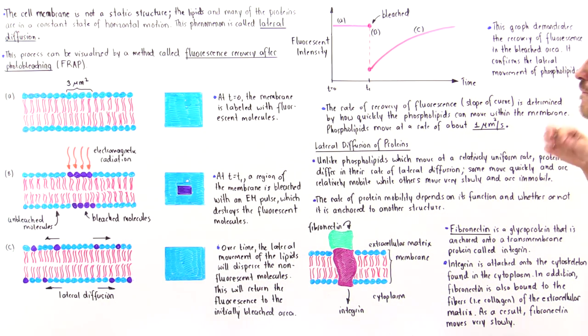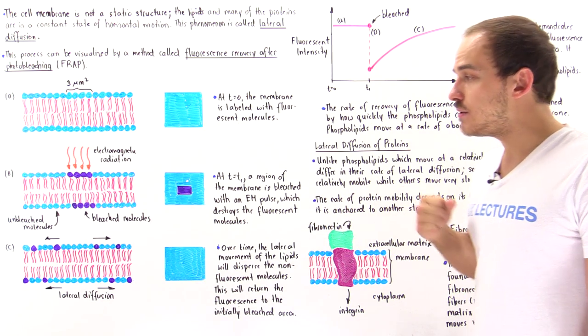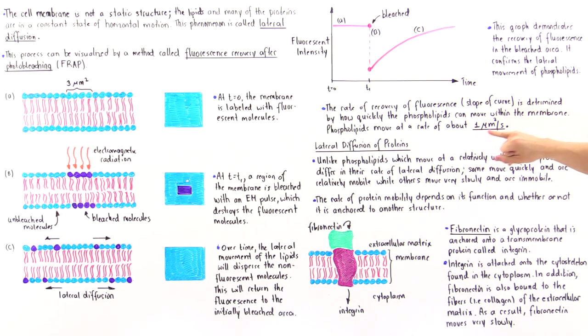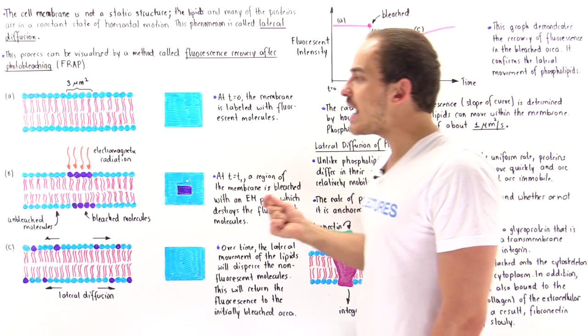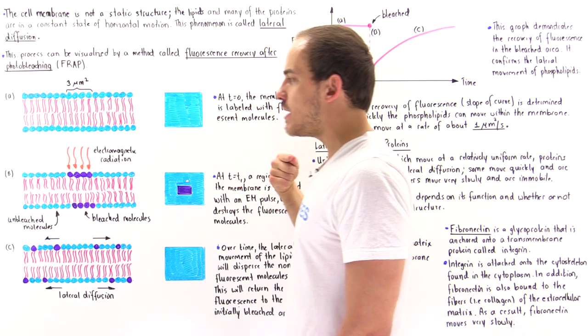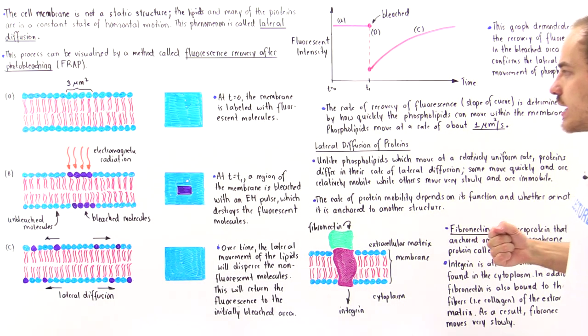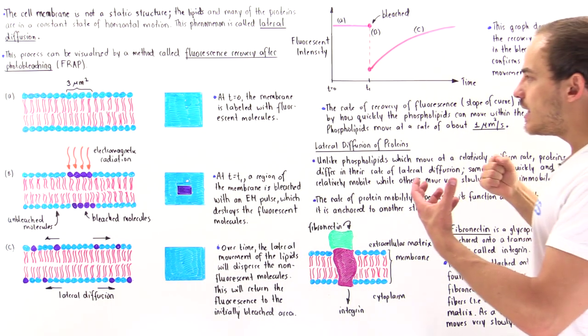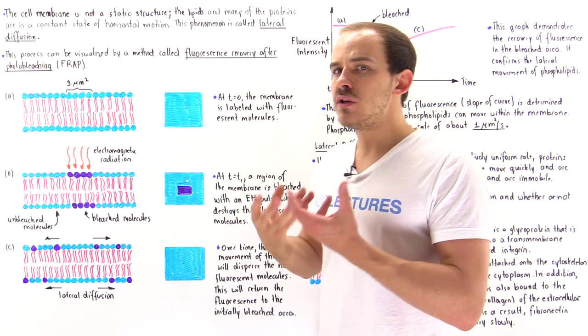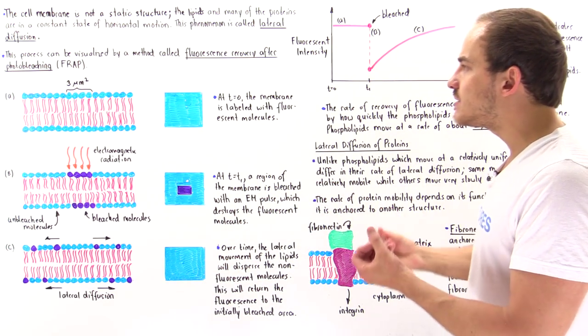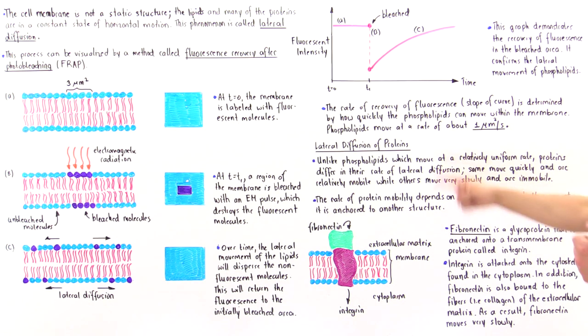So it turns out that phospholipids in general can move at a rate of about one micrometer squared per second. So that means every single second that phospholipid can move one micrometer along that membrane. So once again, these phospholipids generally move with a uniform constant value at a rate of about one micrometer squared per second.